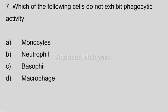Seventh question: Which of the following cells does not exhibit phagocytic activity? Answer options: Option A, monocytes. Option B, neutrophil. Option C, basophil. Option D, macrophage. Correct answer: Option C, basophil.